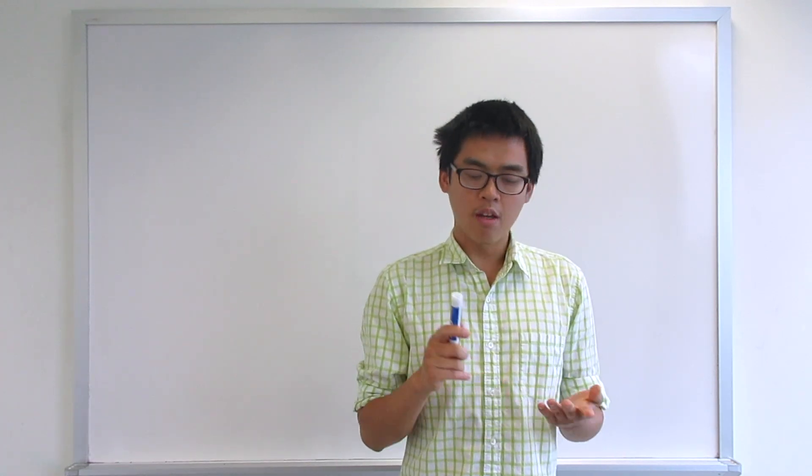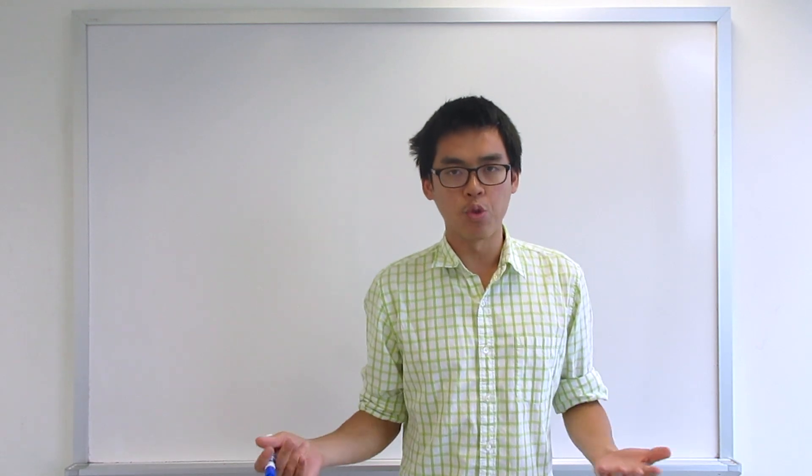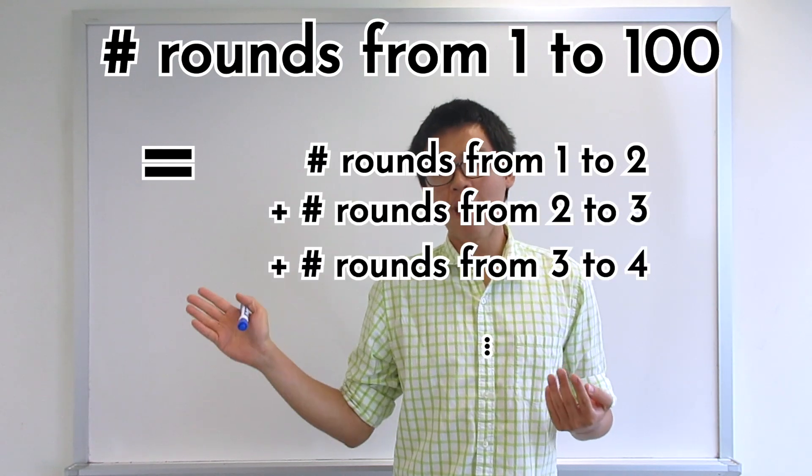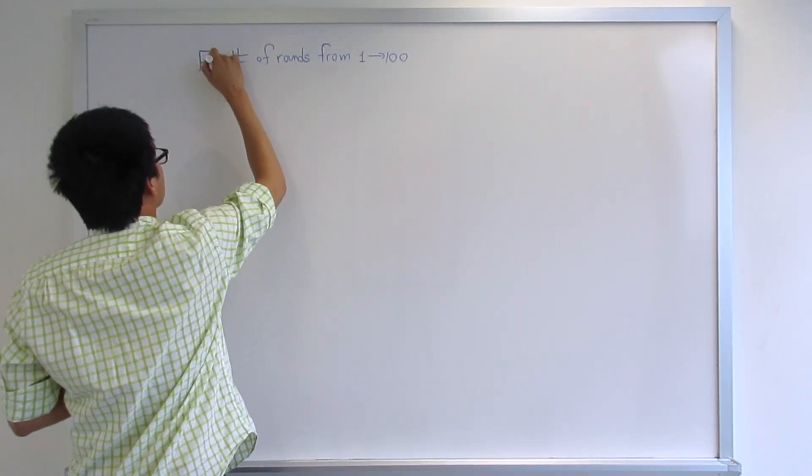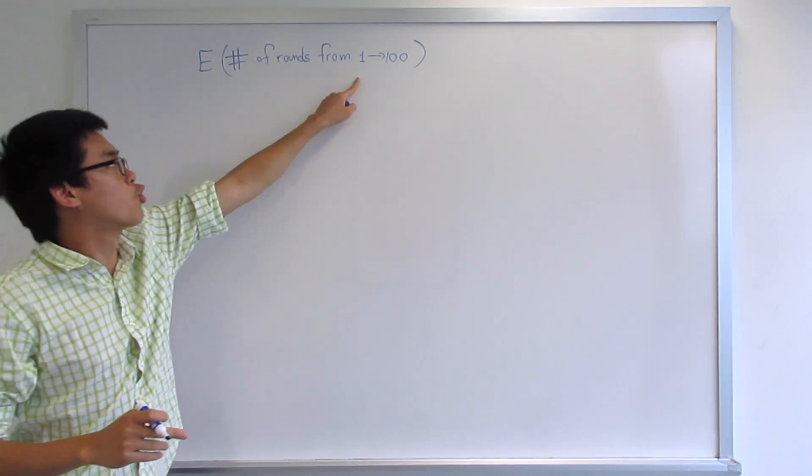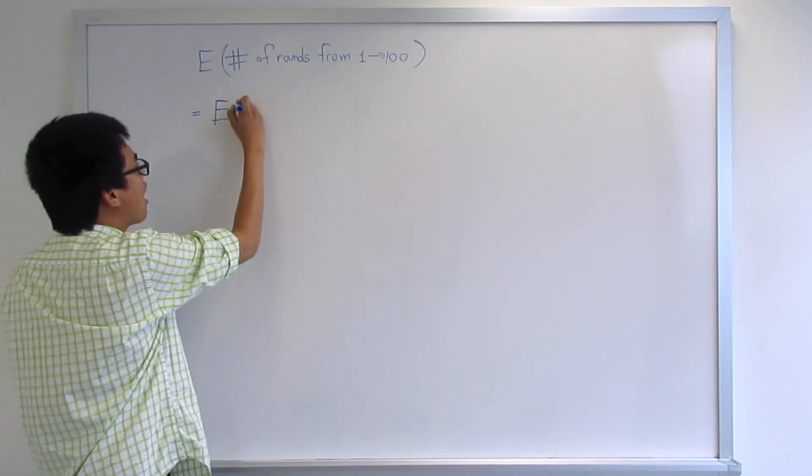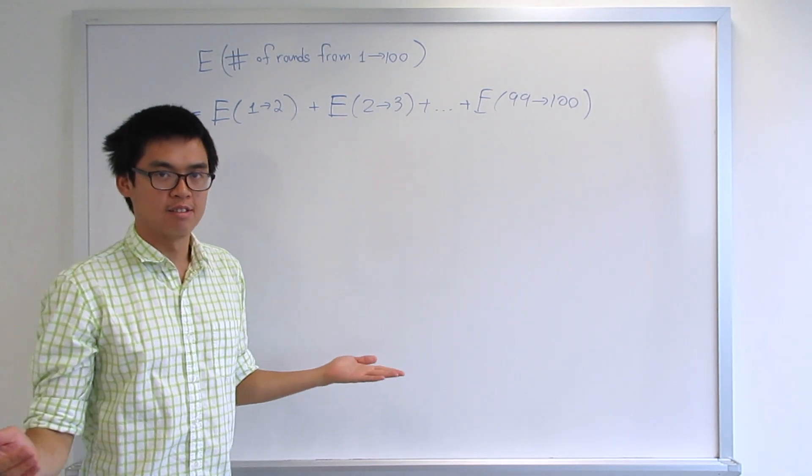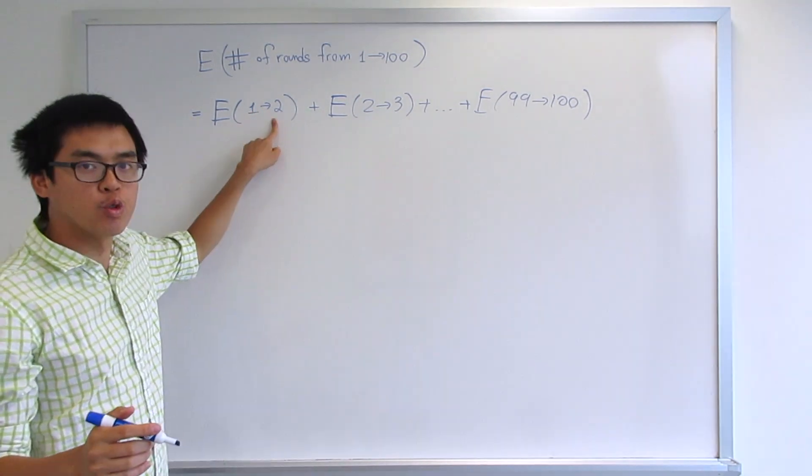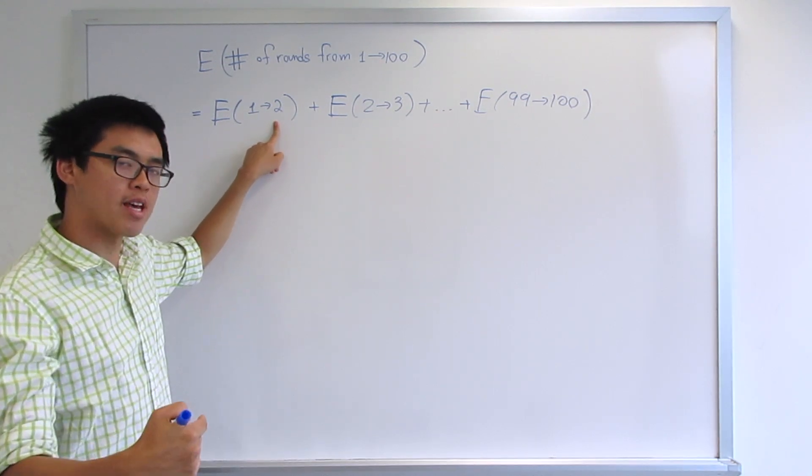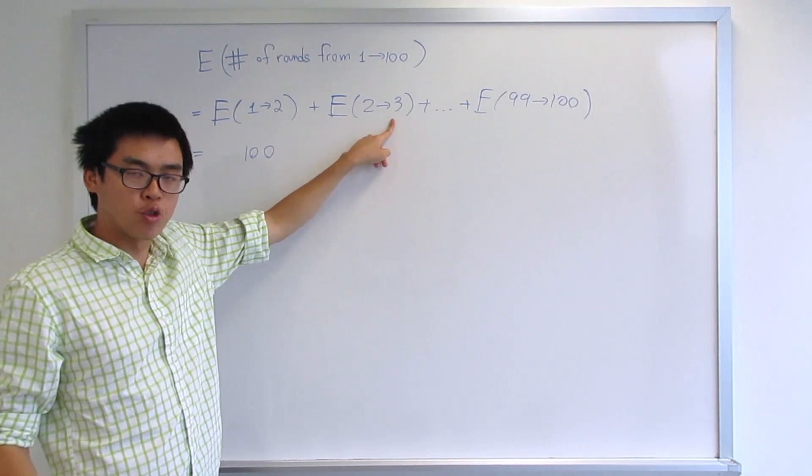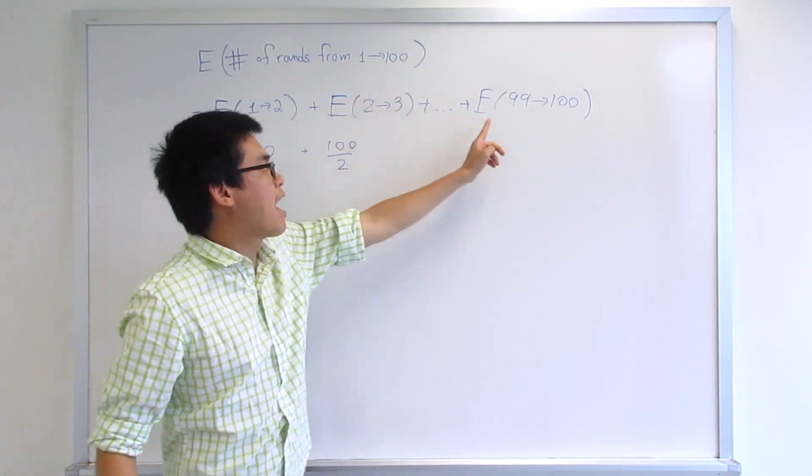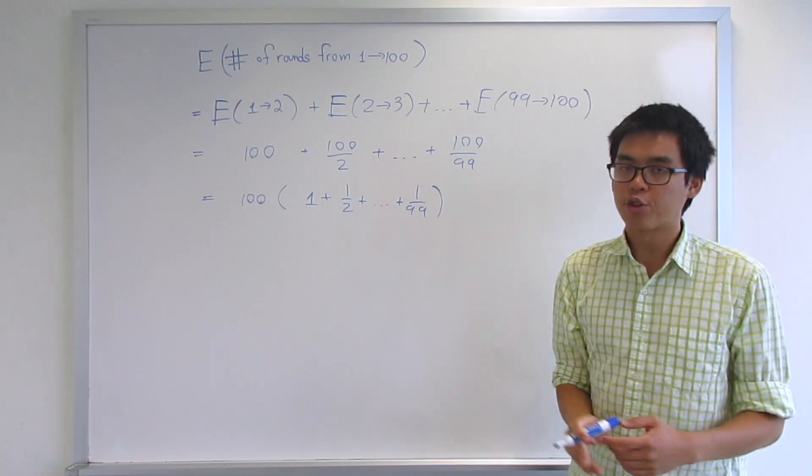Alright, how do we solve it? How do we calculate the number of rounds from 1 to 100? Well, we can break it down to 99 steps, right? 1 to 100 means 1 to 2, 2 to 3, 3 to 4, 4 to 5, all the way to 99 to 100. Alright, so this is what we want to compute. Expected number of rounds to go from 1 to 100 is the same as expected number of rounds from 1 to 2, all the way to expected number of rounds from 99 to 100. And we know all of this, right? So if you have 1 coin, to move to 2 coins, there's a 1% chance. So the number of rounds is 1 over 1%, which is 100. 2 to 3 coins, we have 2%. So the number of rounds is 1 over 2%, which is 100 over 2. From 3 to 4 would be 100 over 3, from 99 to 100 would be 100 over 99, which turned out to be something like this.